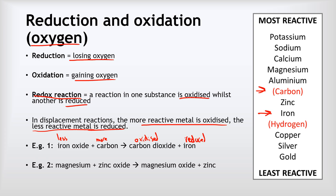A second example: magnesium and zinc oxide. Magnesium is higher on the reactivity series — more reactive — and zinc is lower, less reactive. Because magnesium is more reactive it is able to displace the less reactive zinc, so the magnesium ends up getting oxidized and gaining oxygen, whilst the zinc ends up getting reduced and losing oxygen.